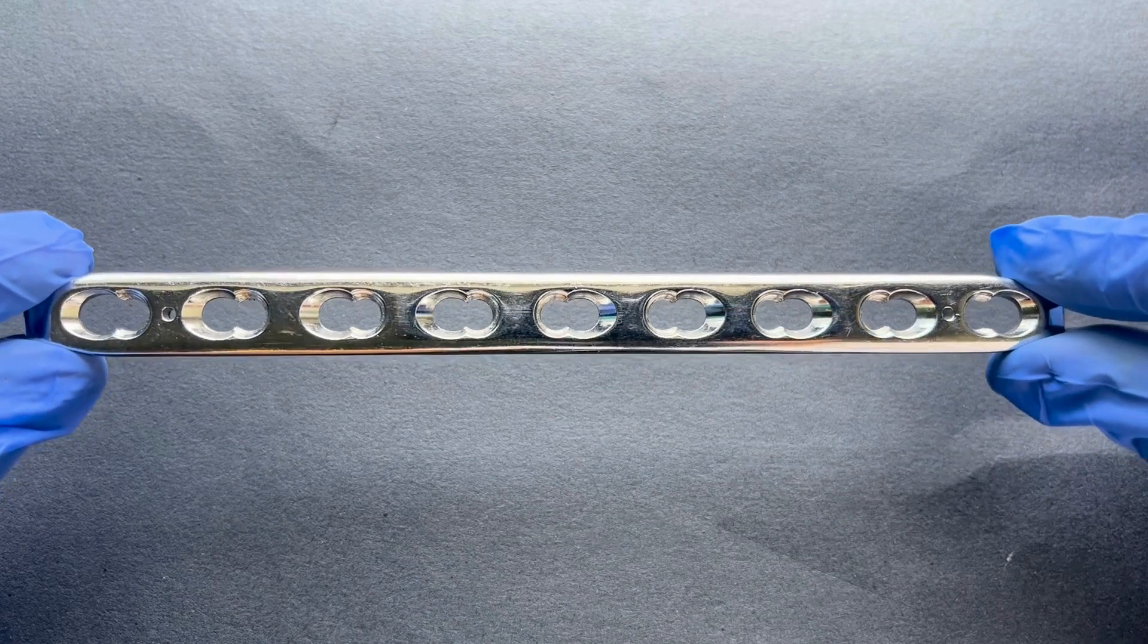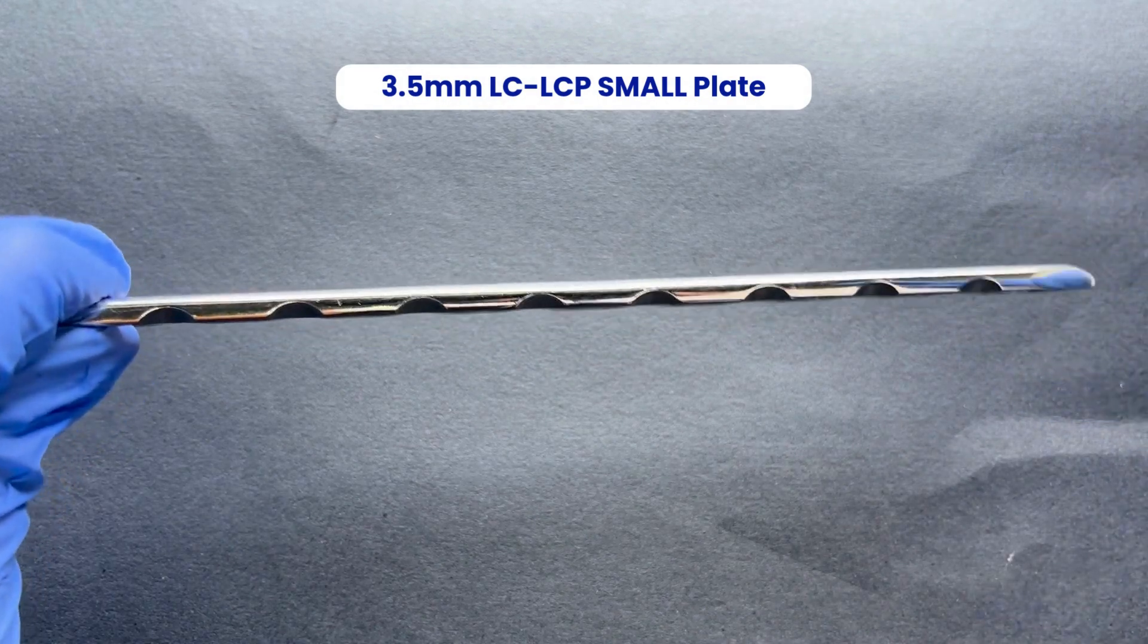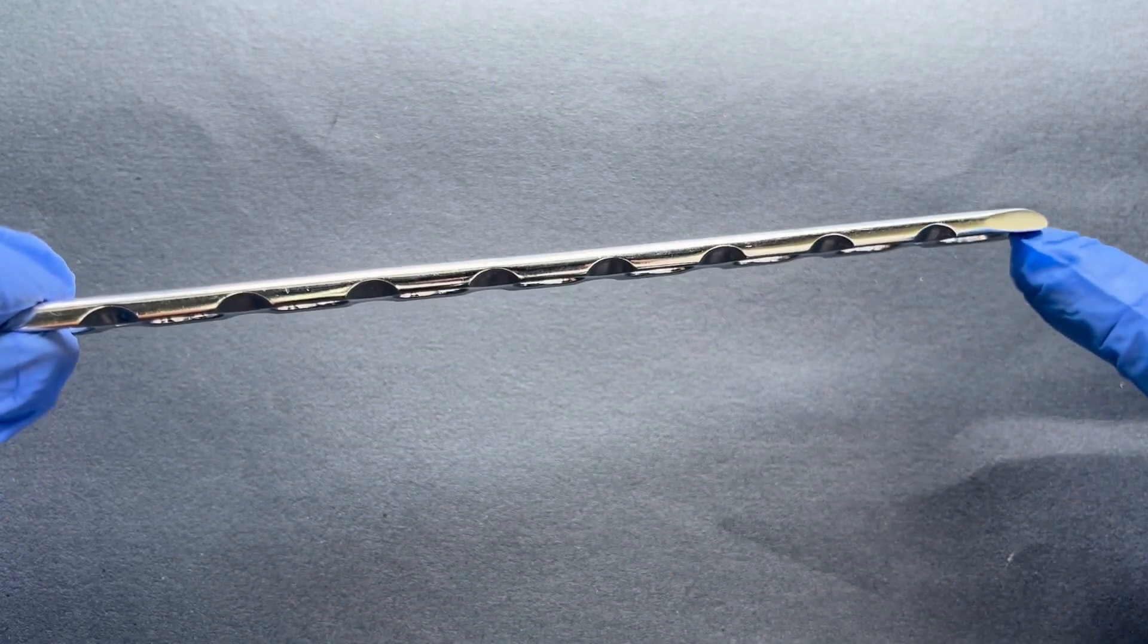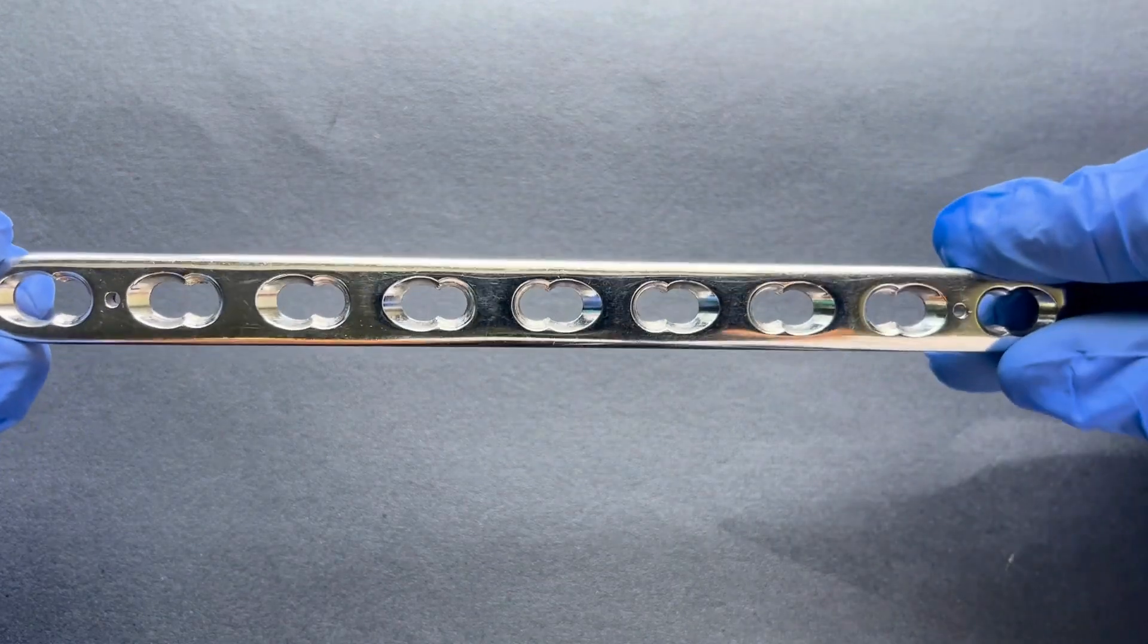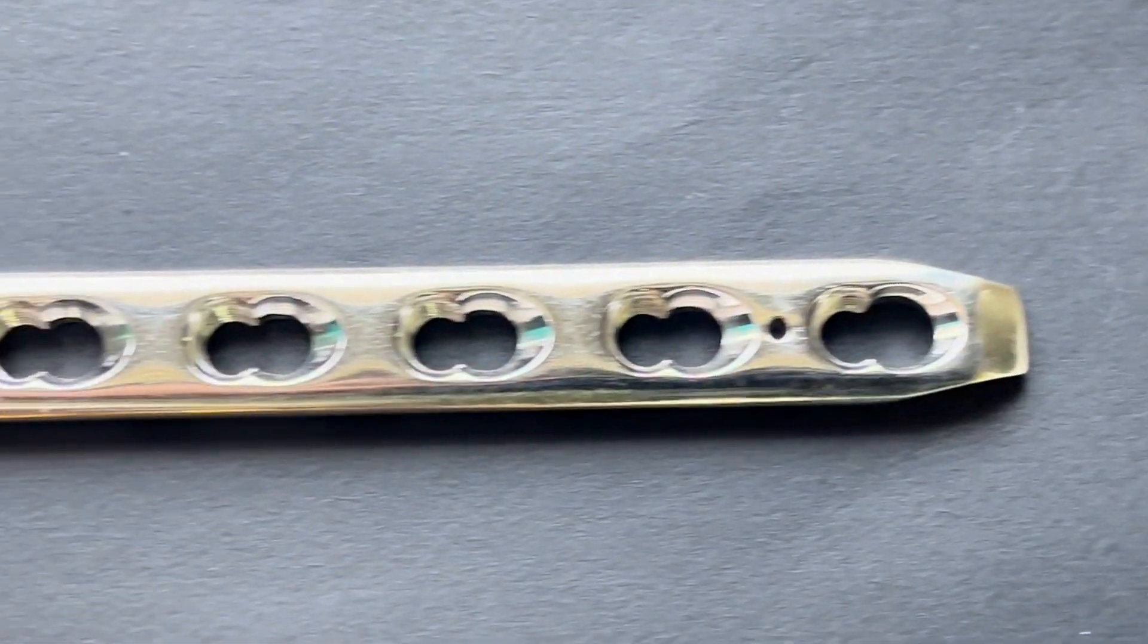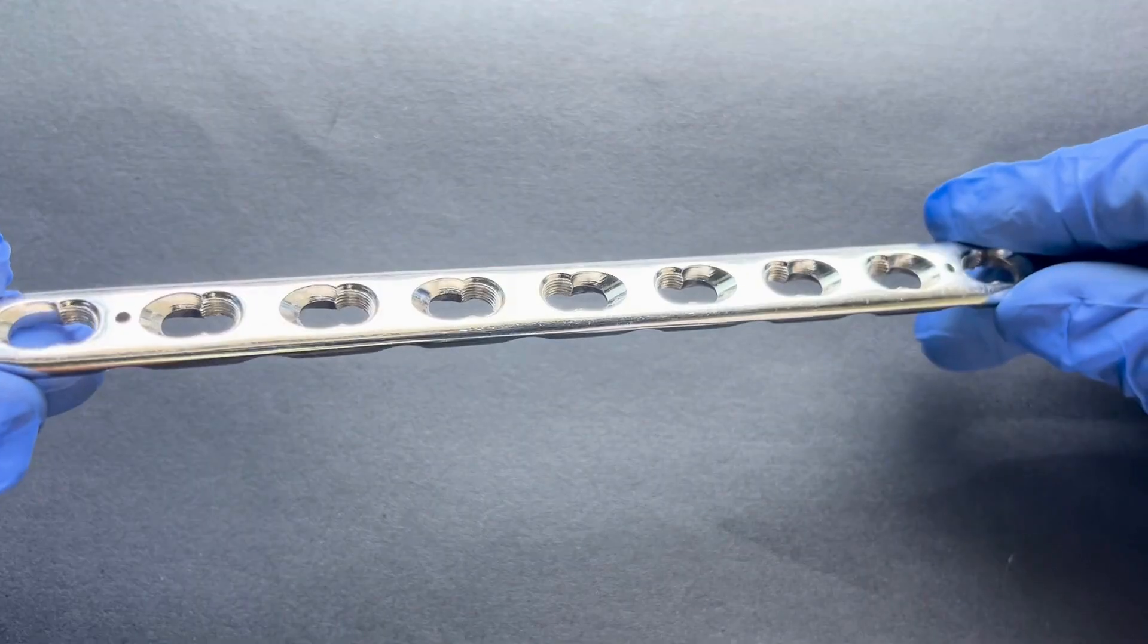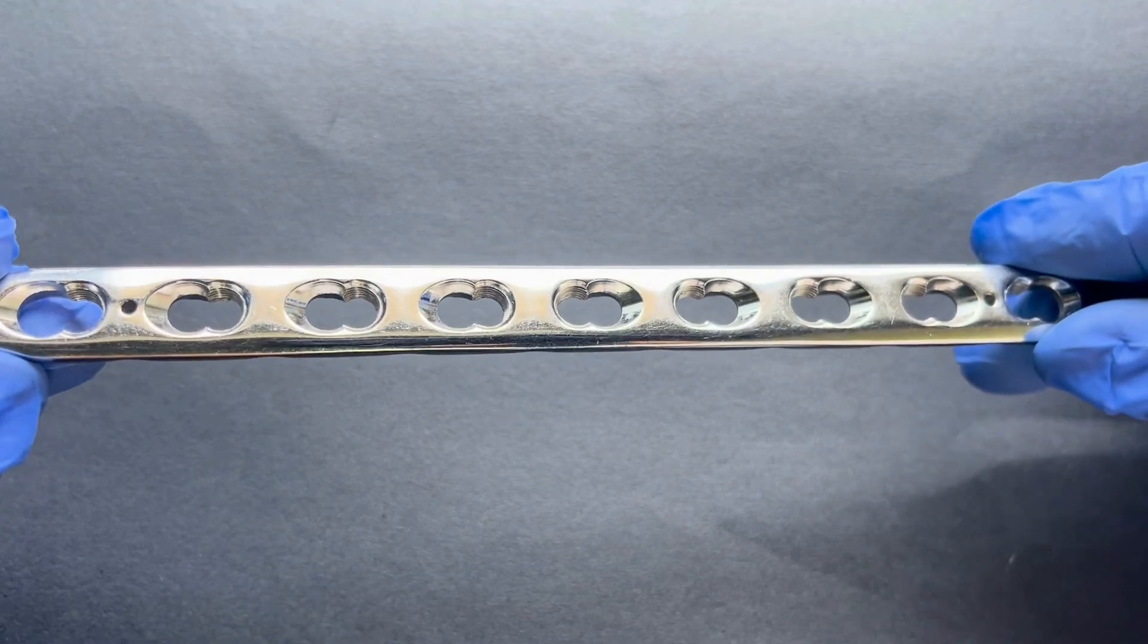Starting with the 3.5mm LCLCP small plate. It ensures precise, limited contact fixation in smaller anatomical regions. This locking compression plate minimizes periosteal damage while providing stable osteosynthesis.